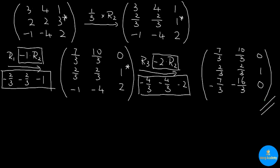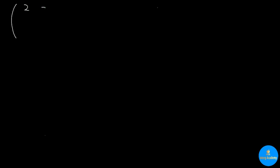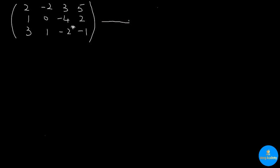Let's take a look at another example. This time we have a 3 by 4 matrix: 2, negative 2, 3, 5, 1, 0, negative 4, 2, 3, 1, negative 2, negative 1. We can pivot at any entry in this matrix except the 0. Let's say we want to pivot at this negative 2. The first thing we need to do is to multiply the reciprocal of the pivot entry, which is 1 over negative 2, to the pivot row, which is R3.